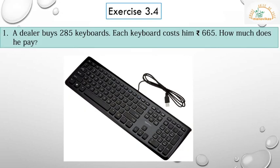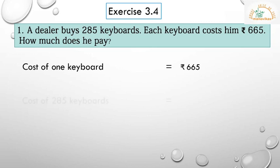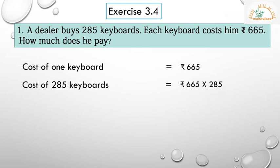Question 1: A dealer buys 285 keyboards. Each keyboard costs him rupees 665. How much does he pay? The cost of one keyboard is rupees 665 and we have to find the cost of 285 keyboards. Here we are multiplying to get the answer. First statement: cost of one keyboard is equal to rupees 665. Cost of 285 keyboards is equal to rupees 665 multiplied by 285.